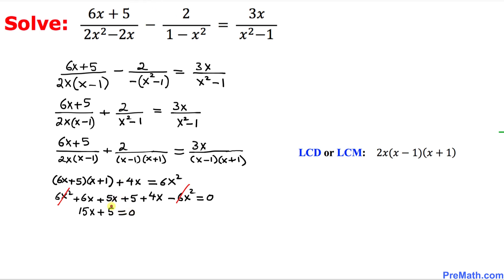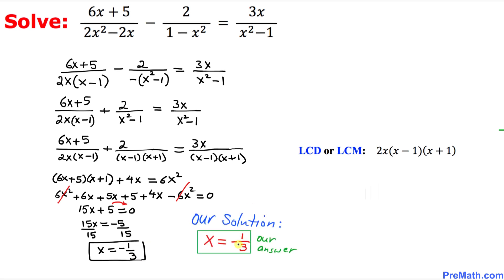Moving 5 to the other side gives 15x equals negative 5. Dividing both sides by 15 to isolate x, we get x equals negative 1 over 3. So our solution is x equals negative 1/3, and that is our answer.